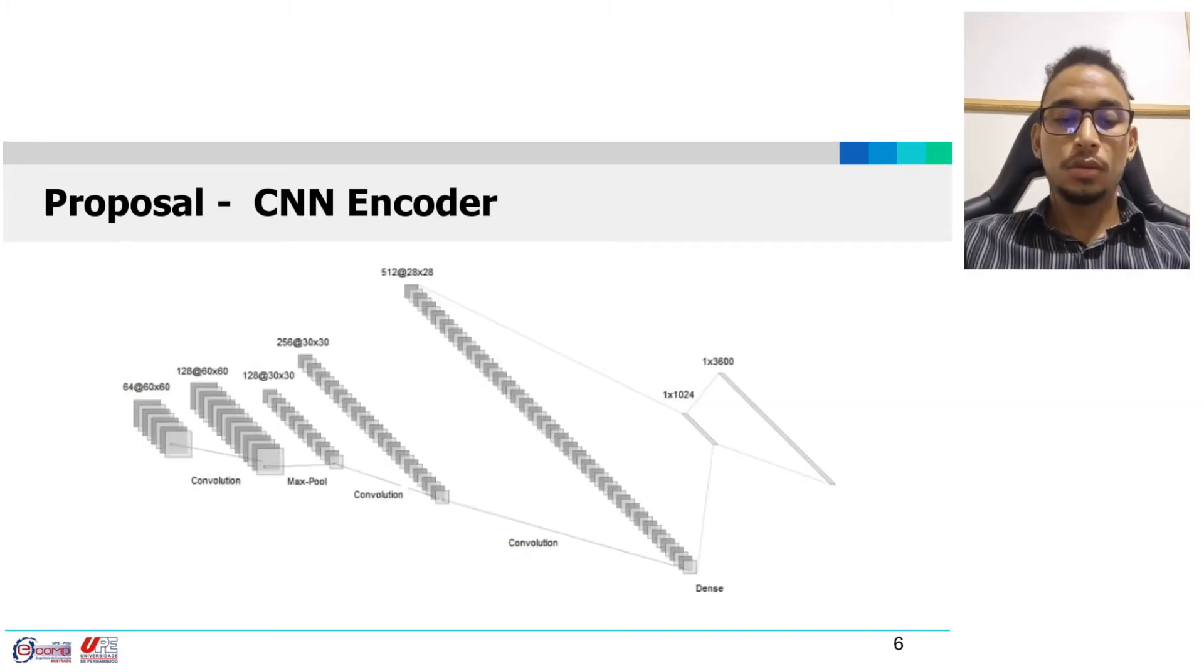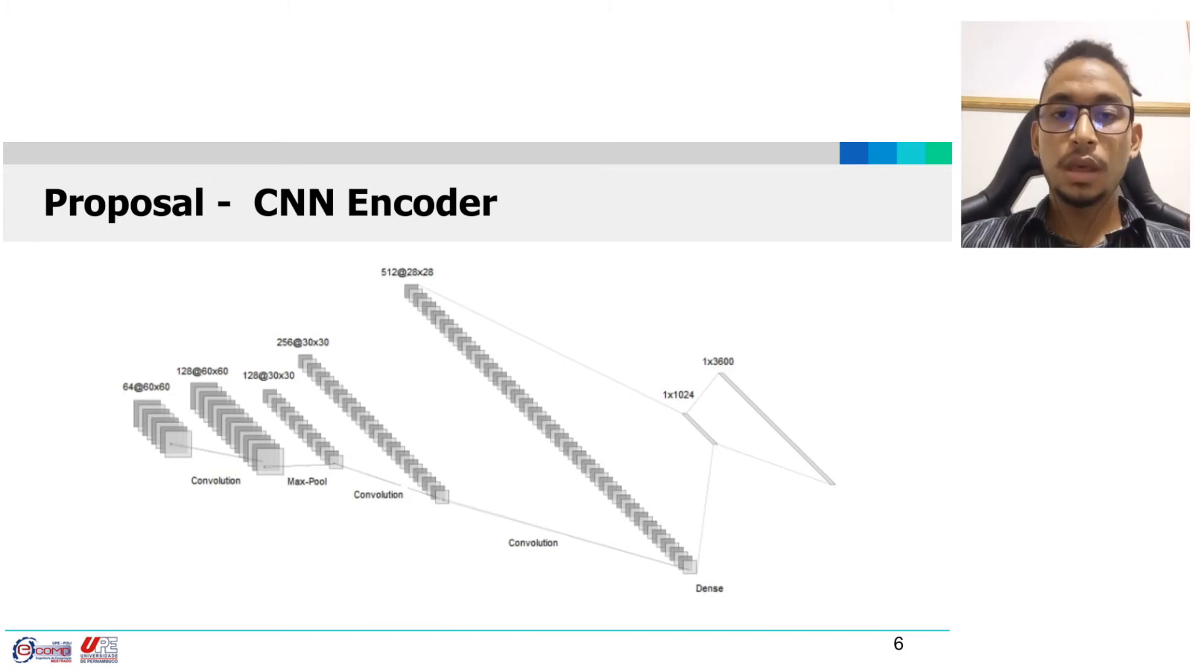So, inspired by the work of Hinton, the CNN encoder was proposed to eliminate useless paths. This is the architecture of the CNN encoder that was evaluated.